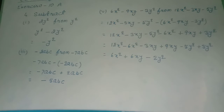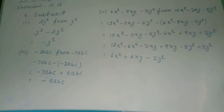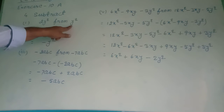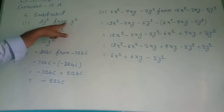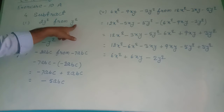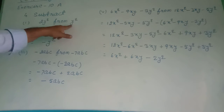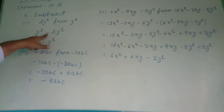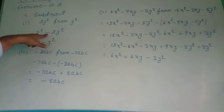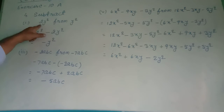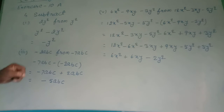Question number 4, subtract. Roman number 1: subtract 2y² from y². What is written after 'from' is written first, so y² comes first. Then minus, because we are asked to subtract. Then 2y². Here is plus and here is minus — plus minus minus means we subtract.